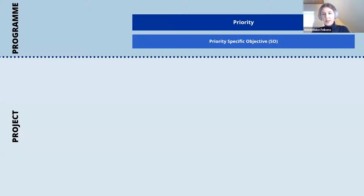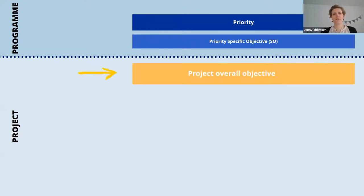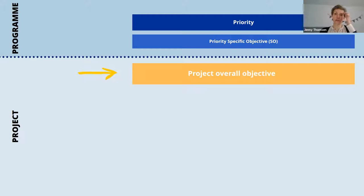When we go to the next slide showing the different building blocks of the intervention logic, you can see we have already covered two building blocks — the two program building blocks of the intervention logic. So now we can get started with the project part. We start with the most important part of the intervention logic, and that is the project overall objective. This building block describes the overall objective of your project and is normally what you should start with when thinking about your intervention logic.